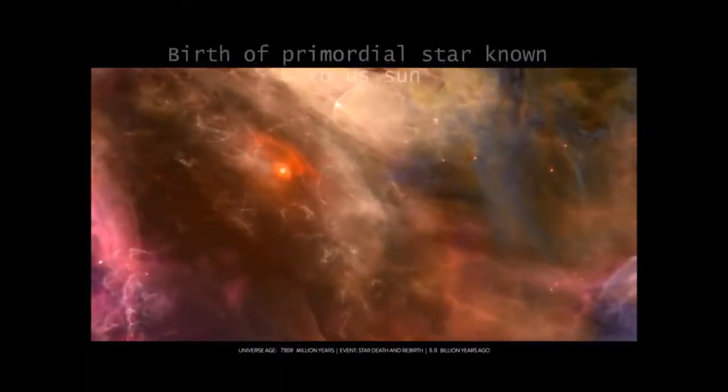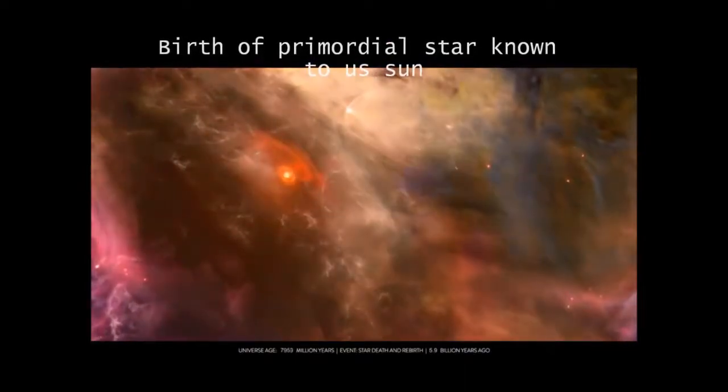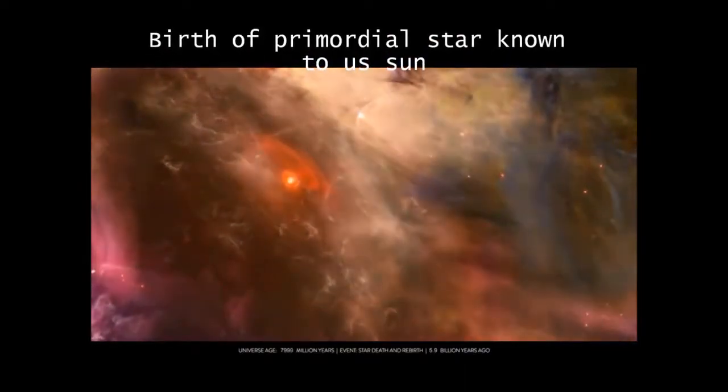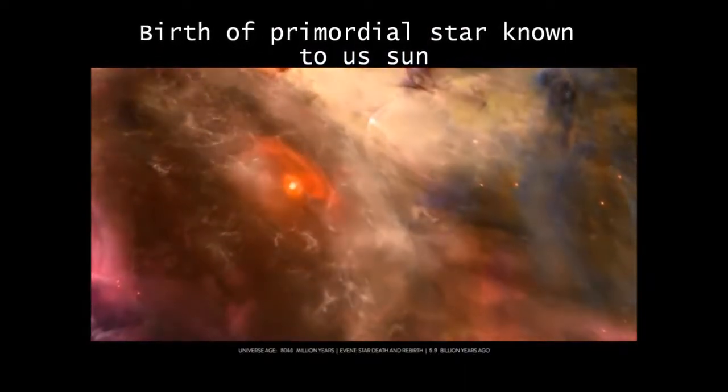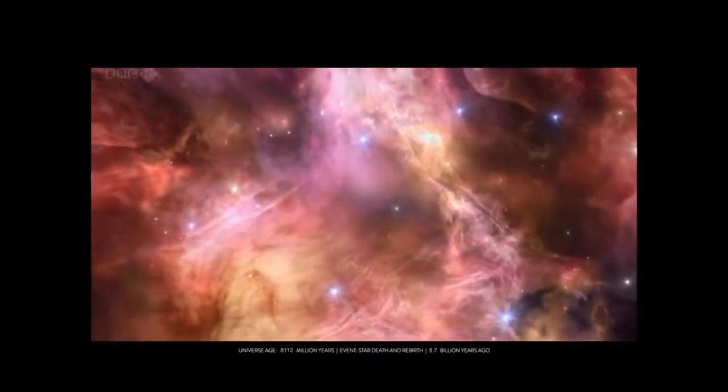It was in a nebula just like this, 5 billion years ago, that gave birth to the primitive sun. Clouds of hydrogen collapsed further and further under the force of gravity, and the life cycle of a new star had begun.